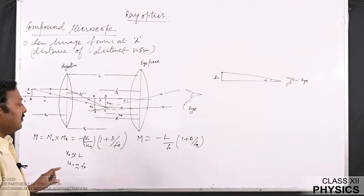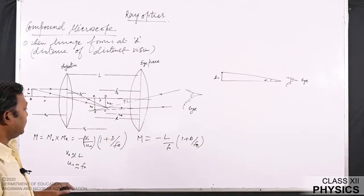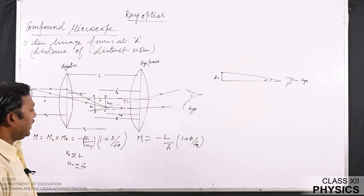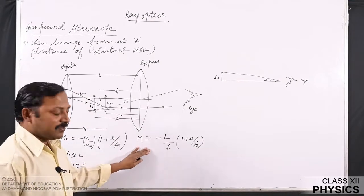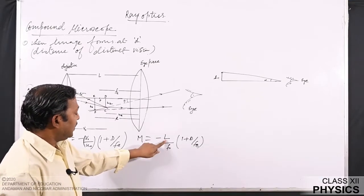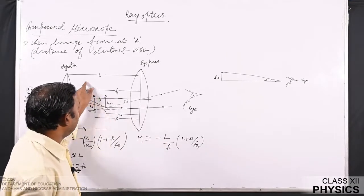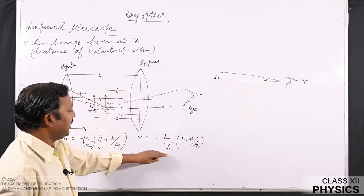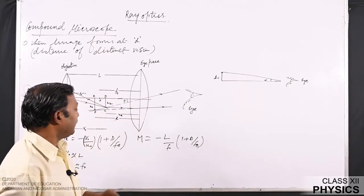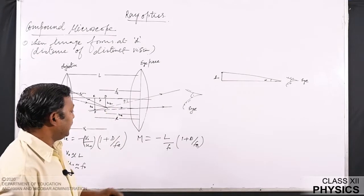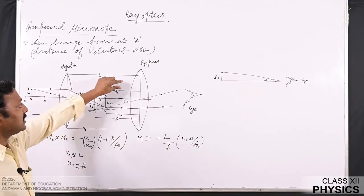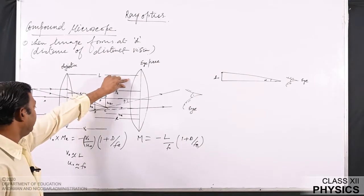This is the final magnification we get in this situation. Magnification increases with the increase of length, that is the separation between the two lenses, and by decreasing the focal lengths of both the objective as well as the eyepiece. That is why, for increasing magnification, the focal lengths of the objective as well as the eyepiece are kept low.